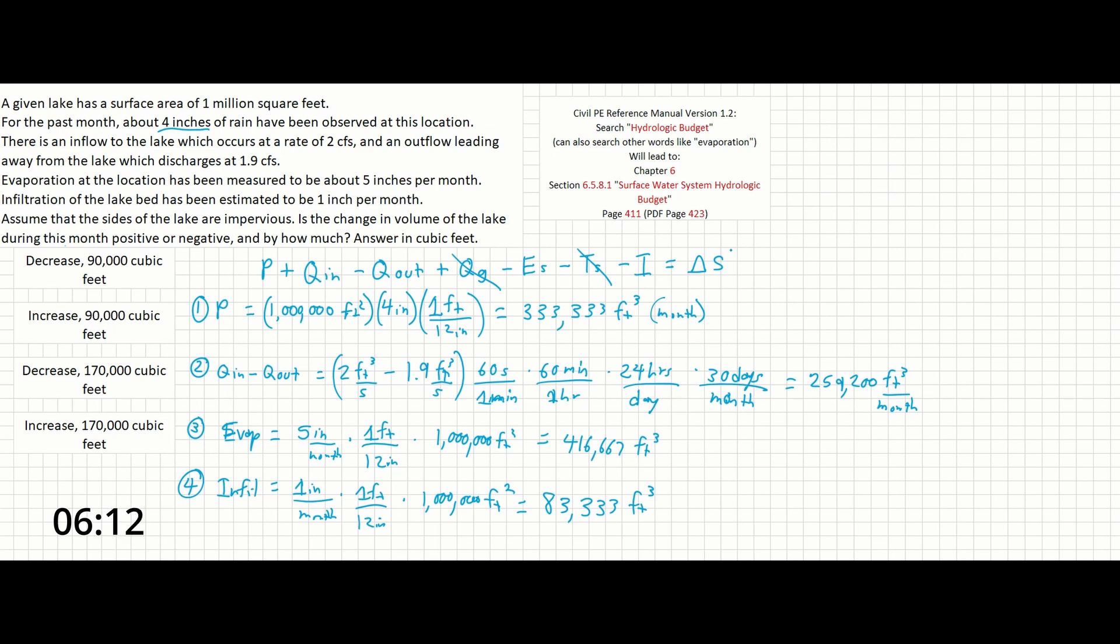Precipitation is going to be an inflow, so let's say plus 333,333. These are all in the same units now. Q_in minus Q_out became positive, so we can leave that as positive since there's more inflow than outflow, and that's going to be 259,200. Evaporation is going to take water away, so 416,667 is a minus. And then infiltration is going to also be a negative here, since that's another source of water loss.